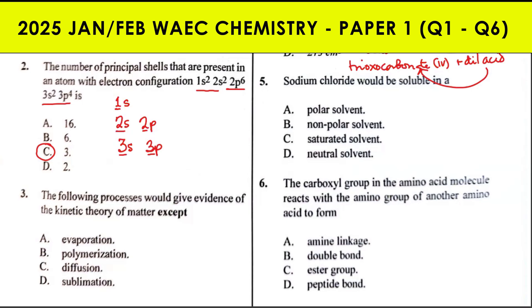Question 3: The following processes would give evidence of the kinetic theory of matter except... The kinetic theory of matter states that matter is made up of very tiny particles which are in constant motion. Evaporation gives evidence because when a liquid evaporates, the particles gain sufficient energy and break free from the surface, showing that matter is made up of particles.